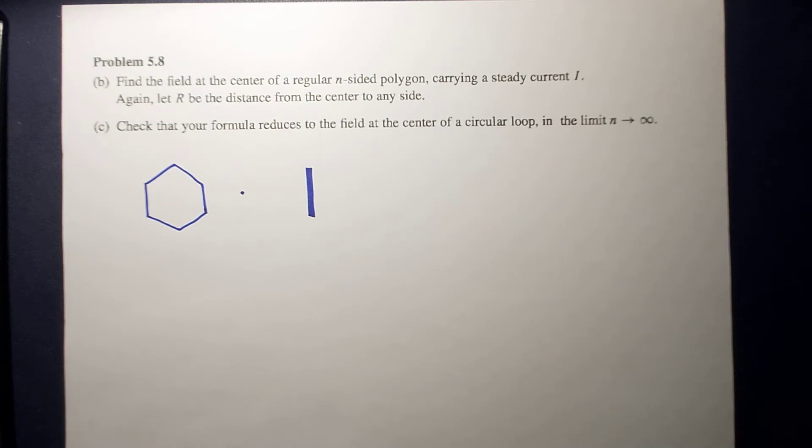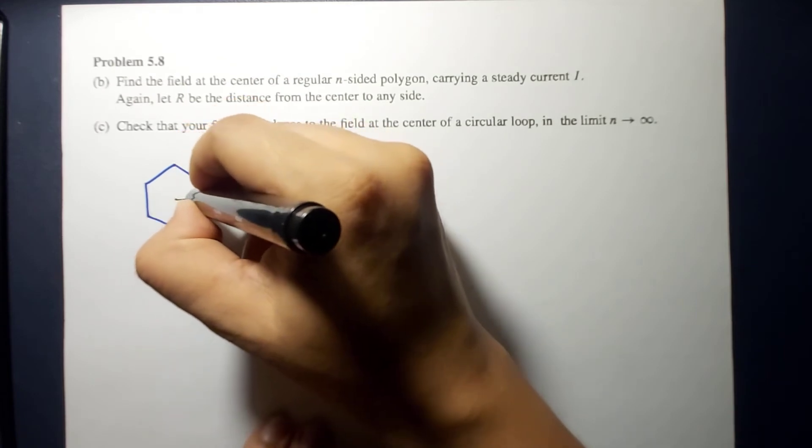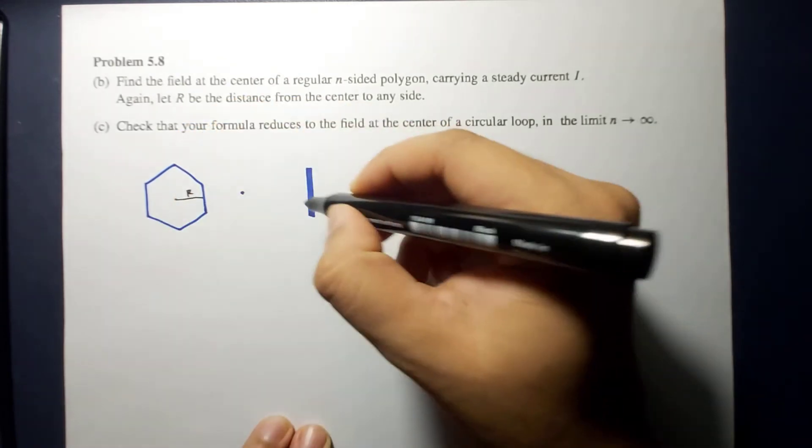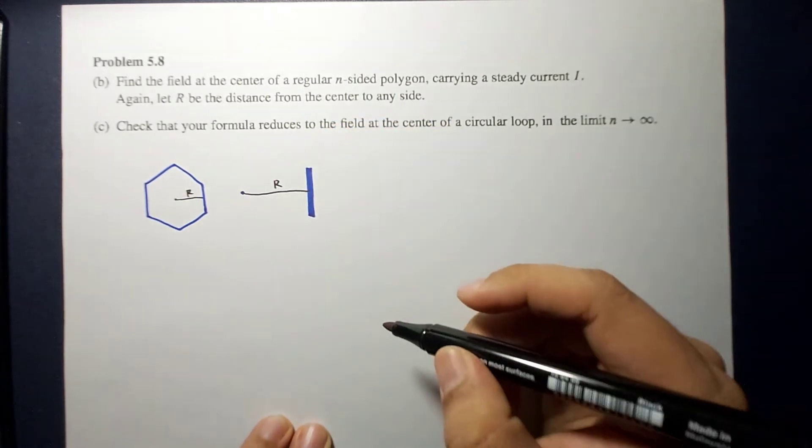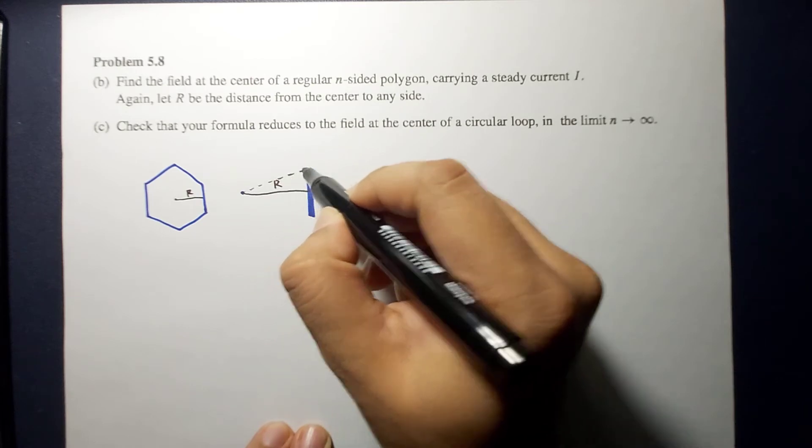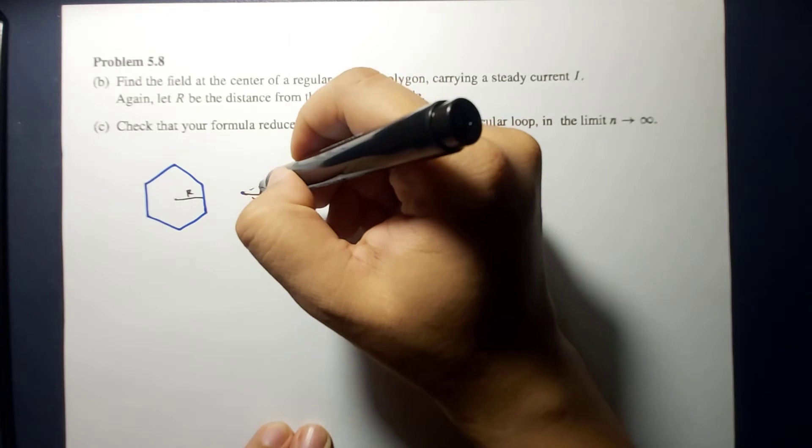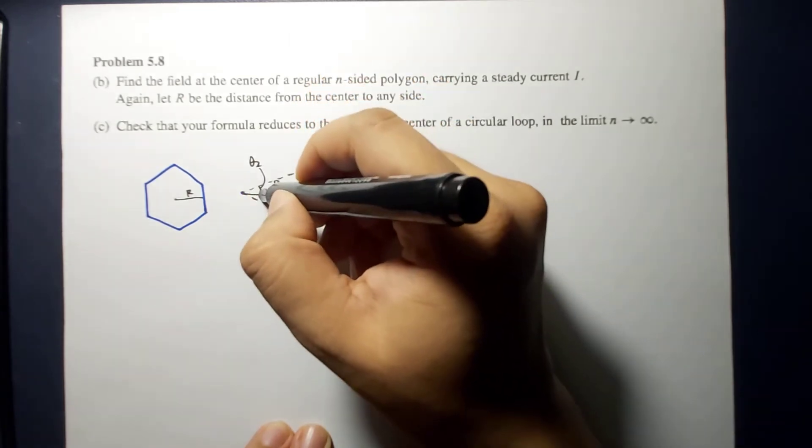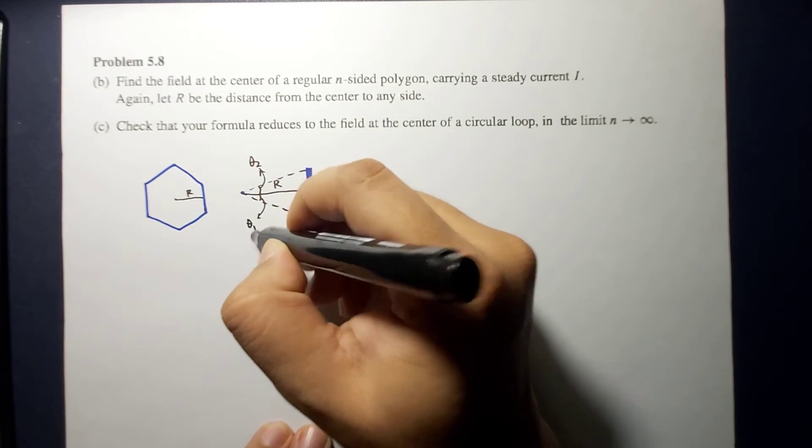If this is our center, so this is our R. We can now draw our angles. Let's say this is your theta 2 and this is your theta 1.